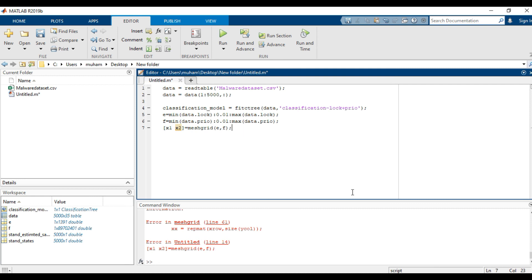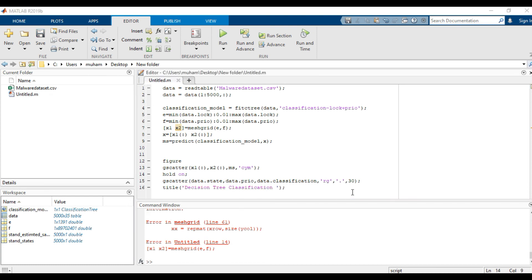This code will predict our decision tree on the dataset on the basis of our two parameters and classify our class. Then we will show it on gscatter and it will show on the graph with colors.